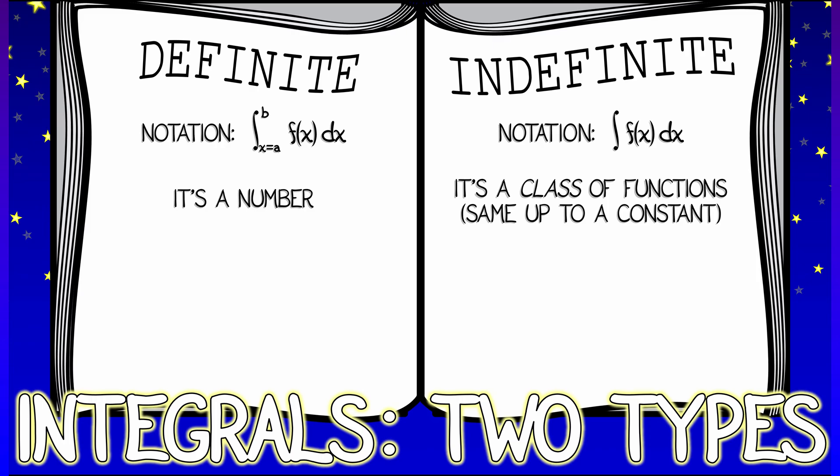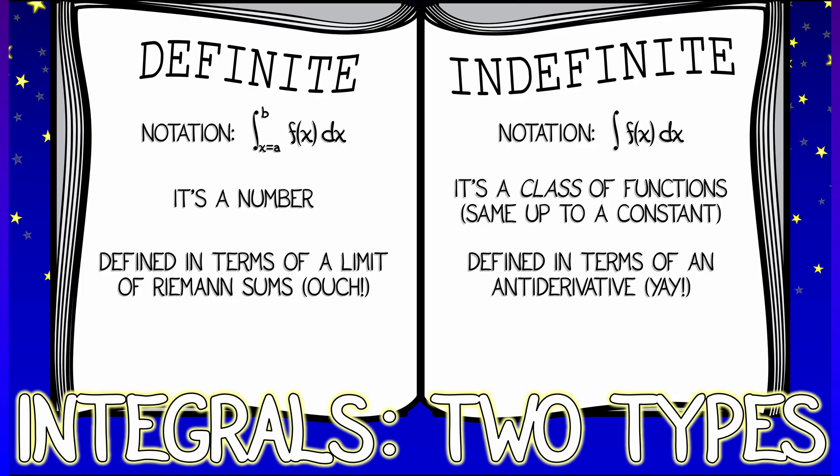There are some more differences. There's a difference just in terms of definitions. The definite integral was defined in terms of a limit of Riemann sums. Ow, I remember that. That was a little painful. In contrast, the indefinite integral was easy to define. It's just an antiderivative. Yay! Don't forget the constant.